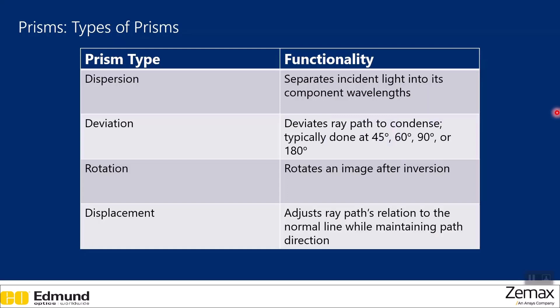Four main types of prisms exist: dispersion prisms separate incident light into its component wavelengths; deviation prisms deviate ray paths to condense the system, typically at 45, 60, 90, or 180 degrees; rotational prisms rotate an image after inverting it; and displacement prisms adjust the ray's path relation to the normal line while maintaining path direction. It's not necessary to understand all of these in complete detail, but it's good to know what options are available for your system design.